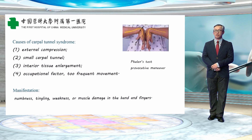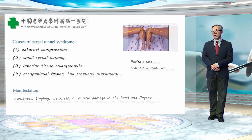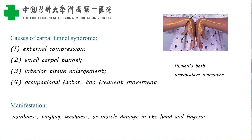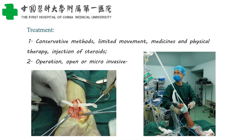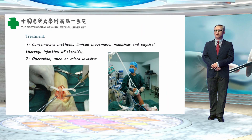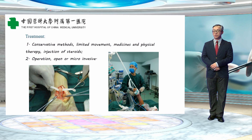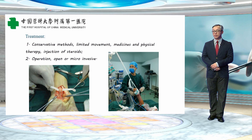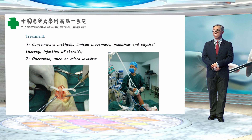The manifestations may be numbness, tingling, weakness, or muscle damage in the hand and fingers. For conservative treatment we can limit movements, give medicines, and provide physical therapy, sometimes with steroid injection. For surgery we have traditional open surgery or minimally invasive surgery — on the left is open surgery, on the right is the minimally invasive approach, which causes less damage to the patient.